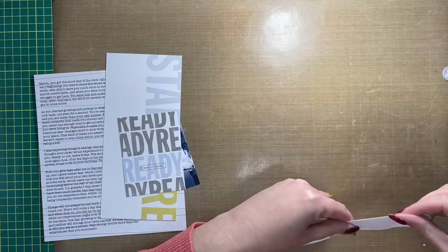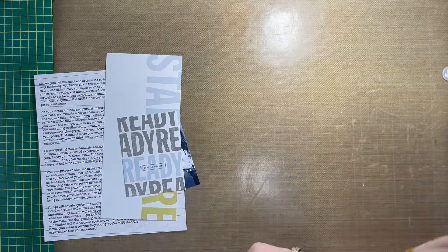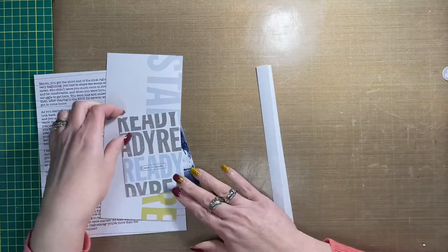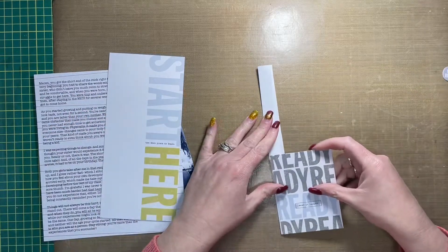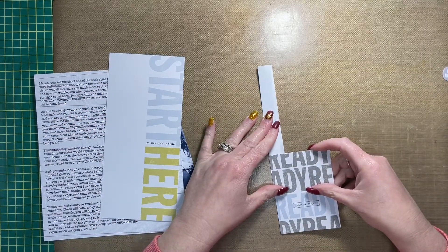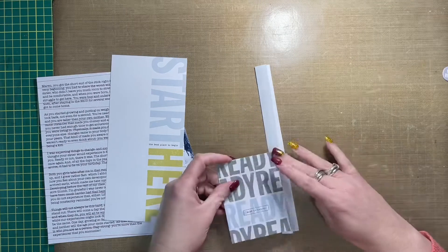So to begin, I am creating a hinge that is going to create a flip on my layout. One side of the hinge is going to have my photo, which I print at three by four inches here at home, and then the other side of the hinge has this journaling card from the Begin Kit.